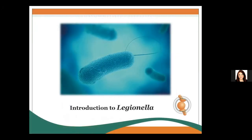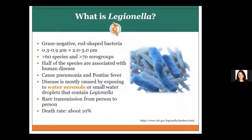So first, let me give you an introduction to Legionella. What is Legionella? It is a gram-negative, rod-shaped bacteria. The cross-section diameter is about 0.3 to 0.9 micrometers, with a length of about 2 to 3 micrometers. Currently, there are more than 60 species and more than 70 serogroups of Legionella. Half of the species are associated with human disease. Legionella can cause pneumonia and Pontiac fever, mostly through exposure to water aerosols or small water droplets. There is very rare transmission from person to person, and the death rate is about 10%.